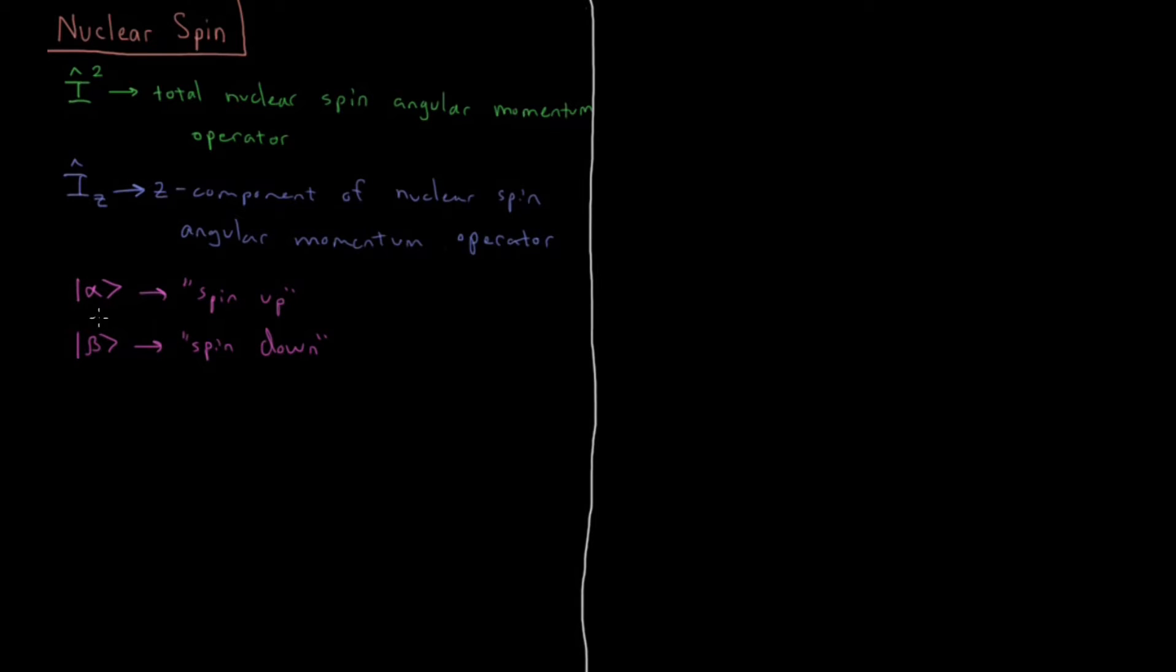We're going to look specifically at these operators and their eigenvalues for protons. So if we have I squared operate on alpha, that gives the eigenvalue 1/2 times 1/2 plus 1 times h bar squared times alpha.